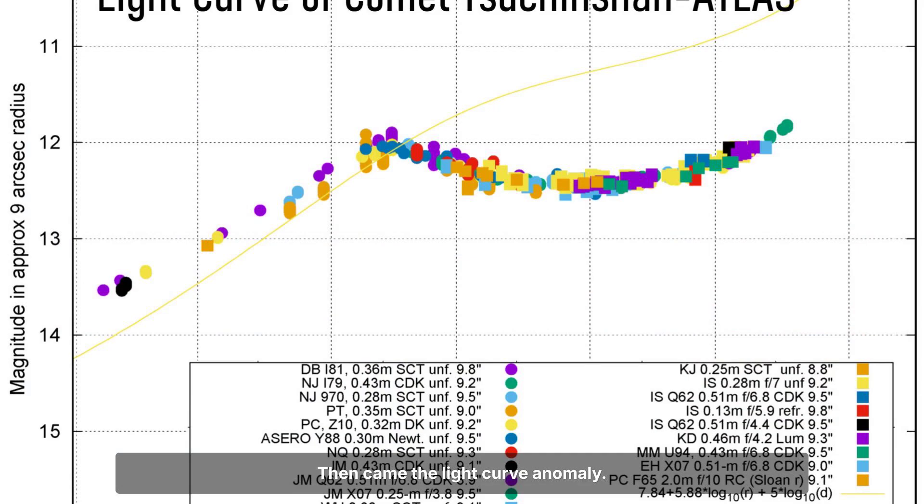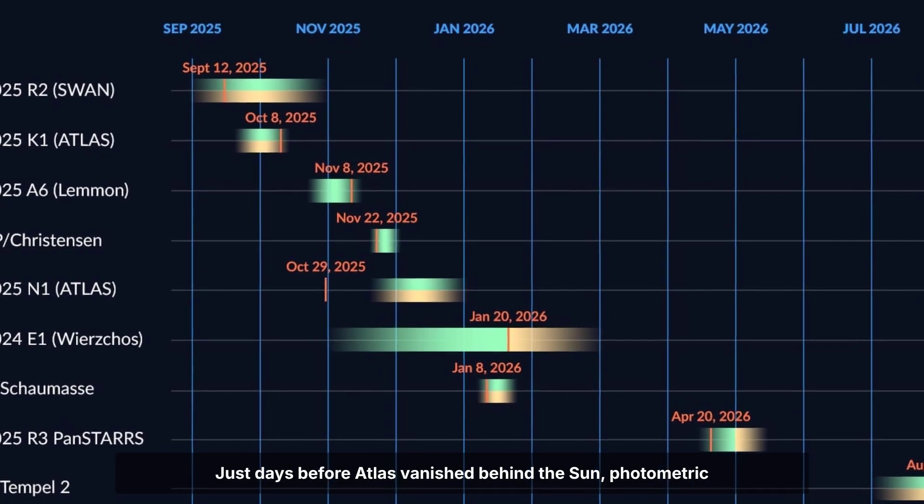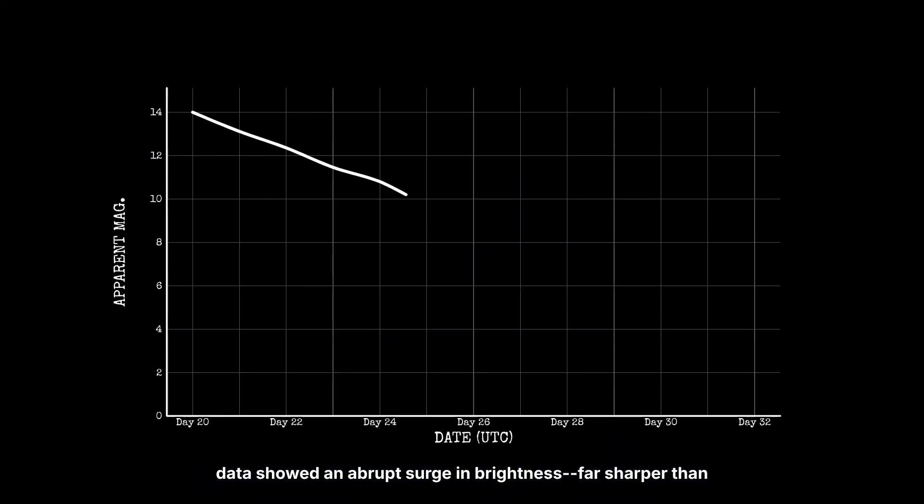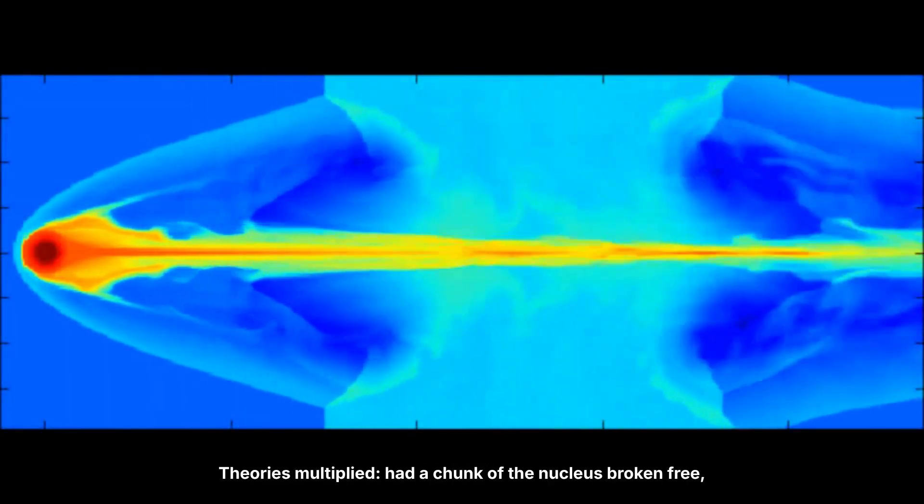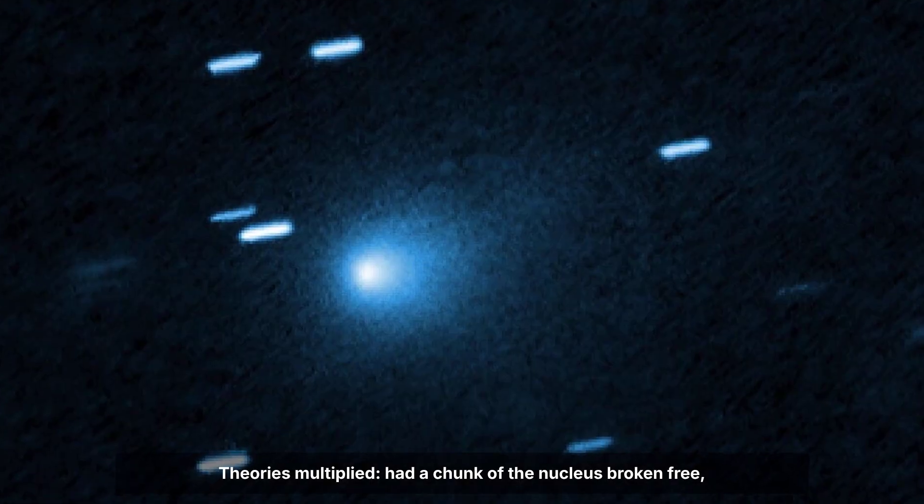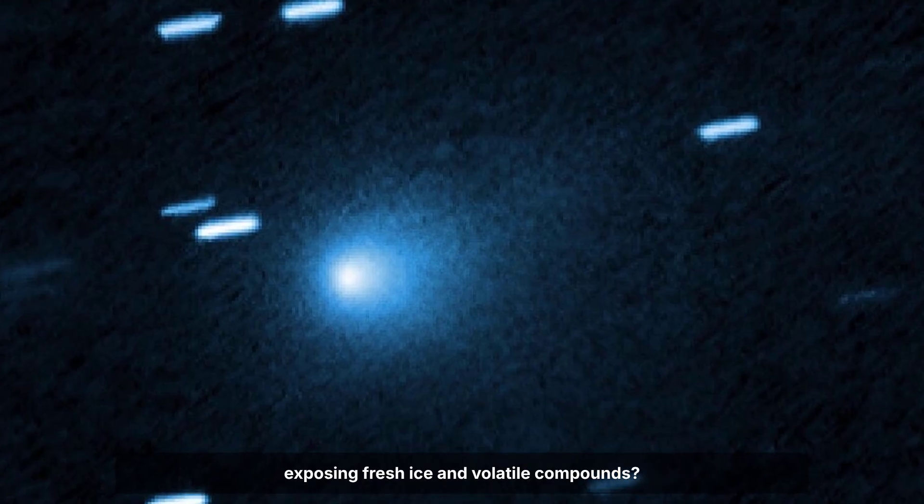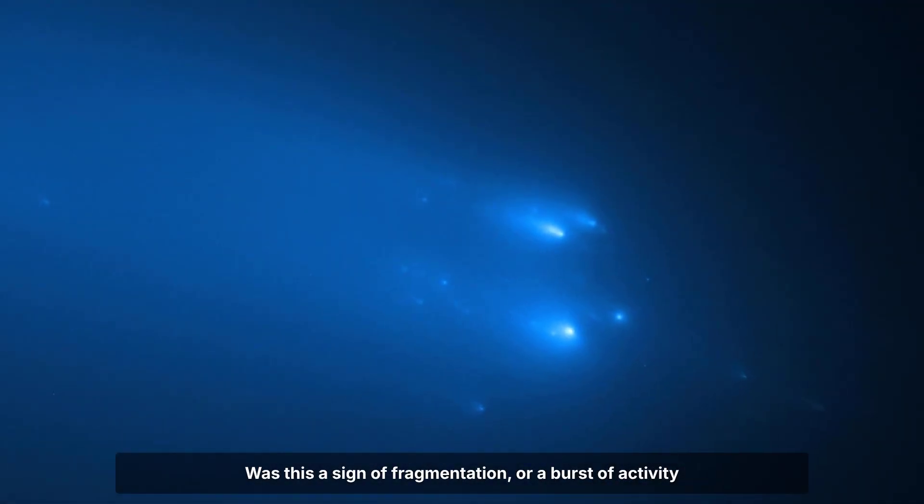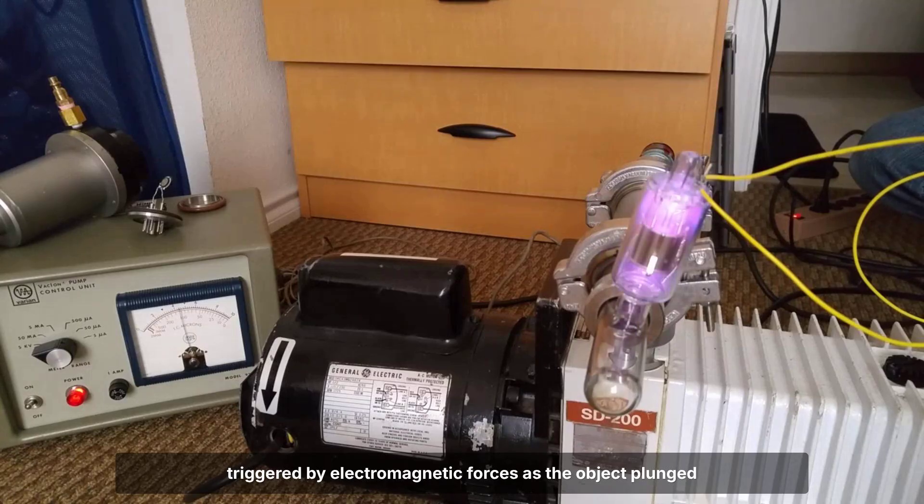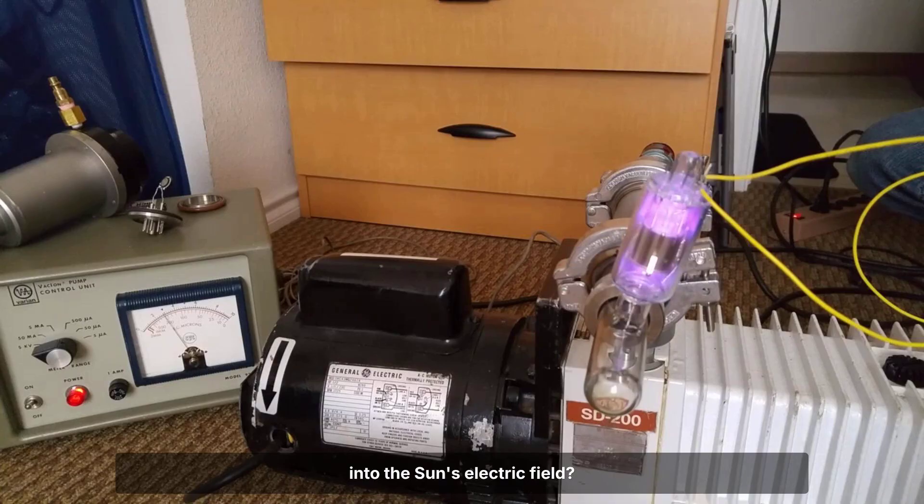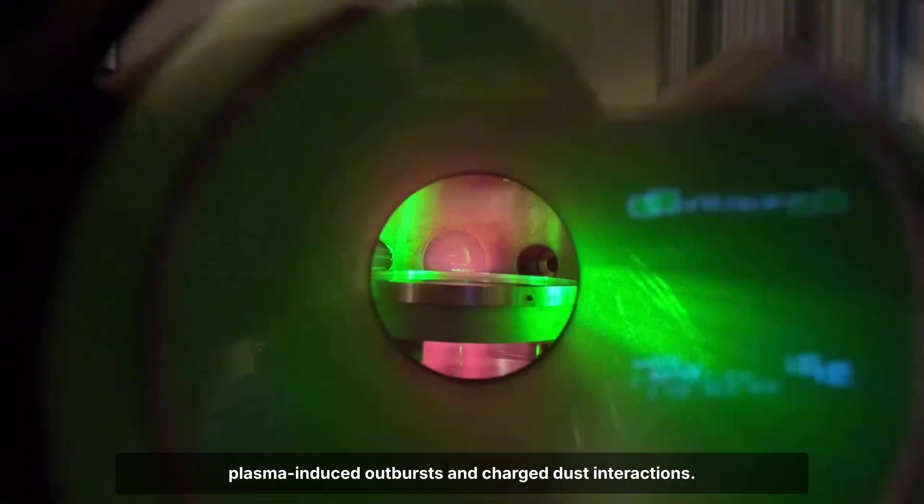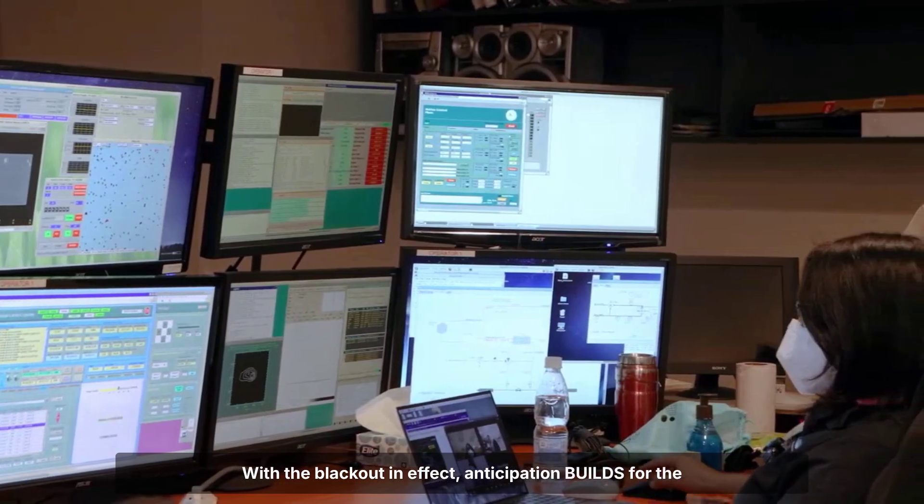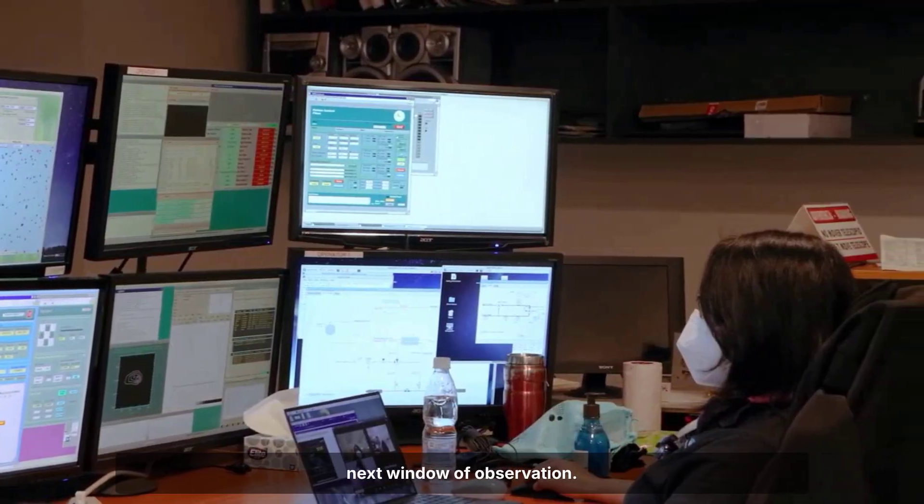Then came the light curve anomaly. Just days before Atlas vanished behind the sun, photometric data showed an abrupt surge in brightness, far sharper than any slow, thermal-driven outgassing could explain. Theories multiplied. Had a chunk of the nucleus broken free, exposing fresh ice and volatile compounds? Was this a sign of fragmentation, or a burst of activity triggered by electromagnetic forces as the object plunged into the sun's electric field? The debates split along familiar lines, thermal physics versus advocates of the electric universe, who argued for plasma-induced outbursts and charged dust interactions.